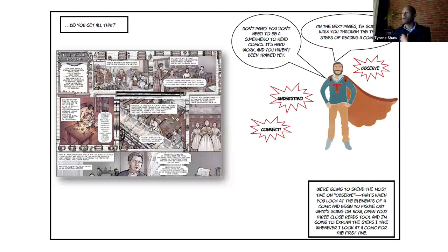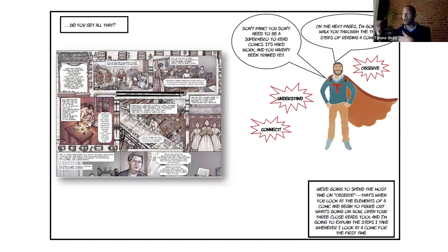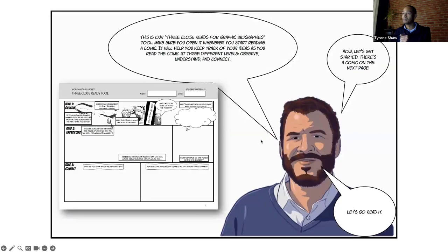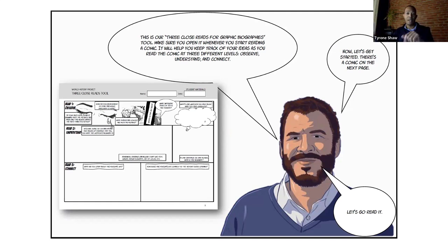Continuing on — how do we move from observe to understand to connect in the three close read process? We want to move students from a basic, shallow understanding of the concept and content of the text to a deeper understanding so that they can use this information to support an argument later on. For example, how would they pull evidence from this text? We're going to spend some time looking at the 'observe' phase — looking at the elements of the comic and beginning to figure out what's going on. Megan is dropping the graphic biographies tool in the chat so you can pull that up and follow along as we jump into our next activity.